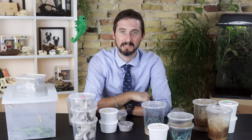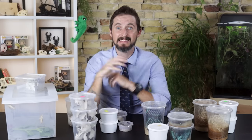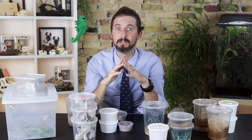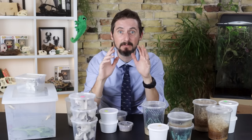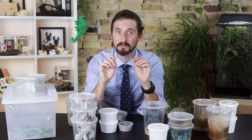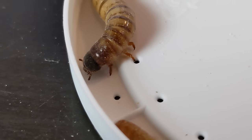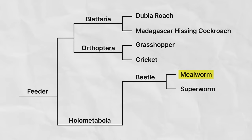The Holometabola are the most successful group of animals, at least in terms of number of species, of any group on the planet. This is largely because the juveniles and adults do not compete directly for resources. Being the most speciose group on the planet, it may come as no surprise that the majority of our feeders come from this group. The first two are both members of the most successful group within the Holometabola — the beetles.